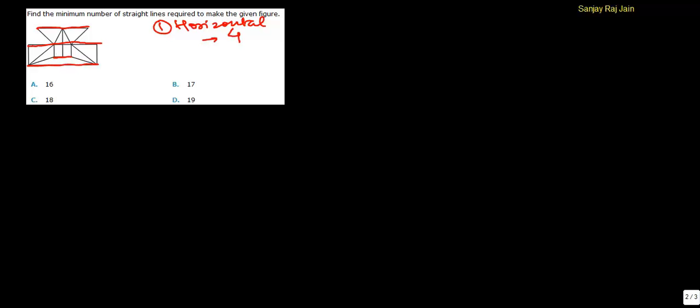Step two was to count vertical lines. So vertical lines are - let's choose a different color - one, two, three, four, and five. So there are five vertical lines.